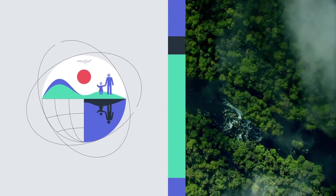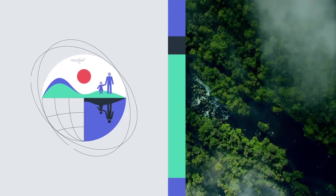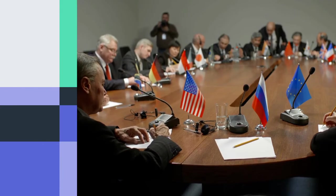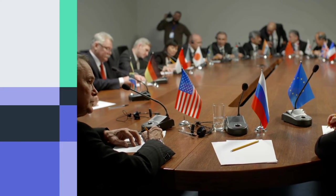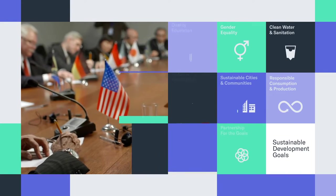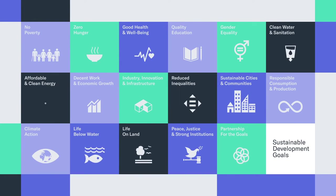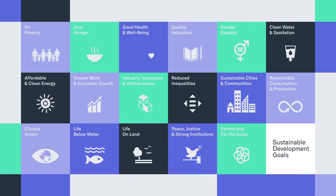The need for sustainable development has been recognized globally. In 2015, 193 countries agreed upon the United Nations Sustainable Development Goals, called SDGs, that are intended to be achieved by 2030. There are 17 SDGs, and they can only be achieved if governments, companies, and other organizations work together.